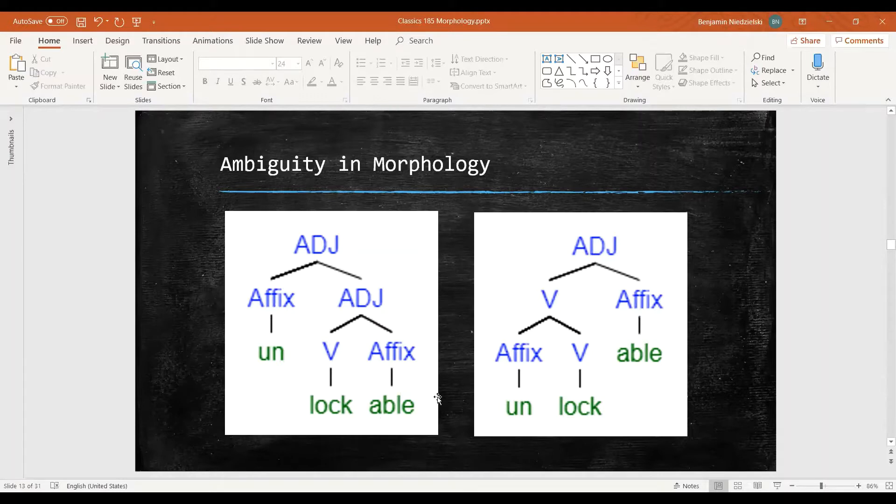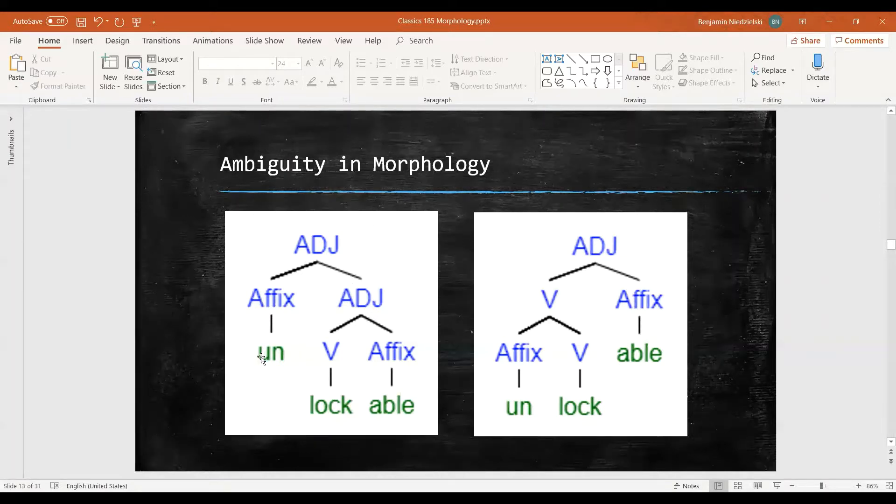We add the affix able, creating an adjective. Then as we go up, we add our prefix un, creating unlockable, an adjective. This means not able to be locked. We can tell because this un is negating the whole adjective lockable.